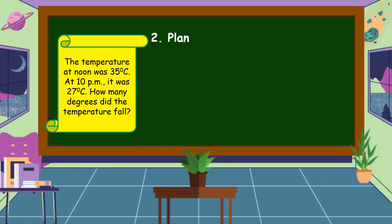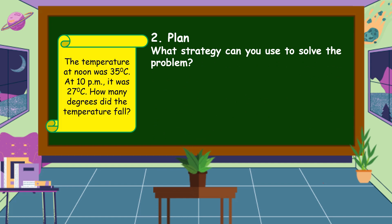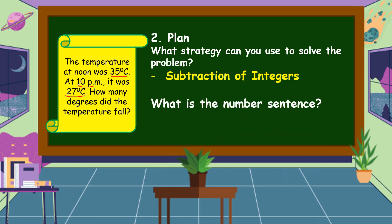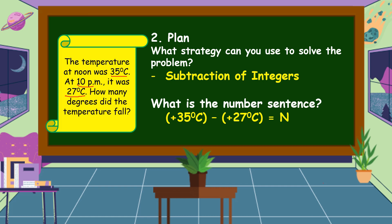The next step is we are going to make a plan. What strategy can you use to solve the problem? Since at noon the temperature was 35 degrees Celsius and at 10 p.m. it was 27 degrees Celsius, we are going to use subtraction of integers. What is the number sentence? The number sentence is: positive 35 degrees Celsius minus positive 27 degrees Celsius is equal to N.